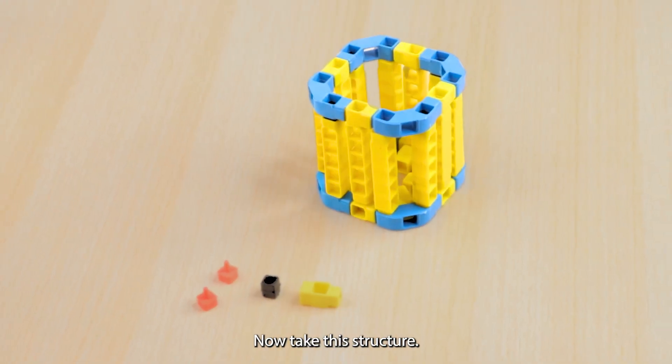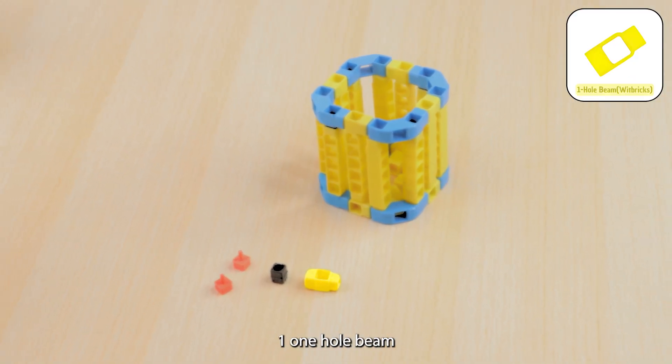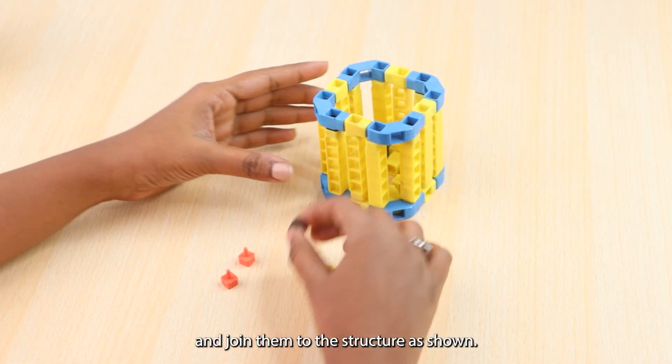Now take this structure, 2 block holders, 1mm couplers, 1 one-hole beams and join them to the structure as shown.